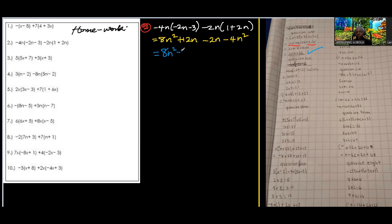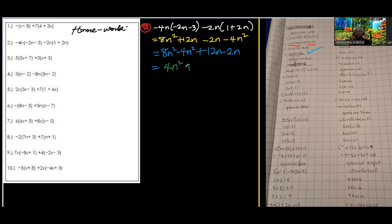Bringing the like terms together: 8n squared minus 4n squared, then plus 12n minus 2n. Subtracting gives 8 minus 4 equals 4n squared, and 12 minus 2 is plus 10n. So the answer is 4n squared plus 10n.